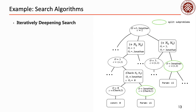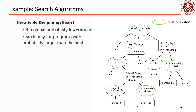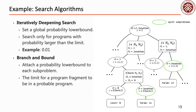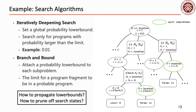When performing iteratively deepening search, a global lower bound is set. The search only focuses on programs with probability larger than the limit, and the limit is constantly relaxed until one solution is found. Here, we assume the lower bound is 0.01. Branch and bound attaches a subprobability lower bound to each subproblem, representing that the current fragment is possible to be in a probable program only when its probability is larger than the lower bound. To perform branch and bound, two questions need to be answered: how we propagate lower bounds among subproblems, and how we use them to prune search states.